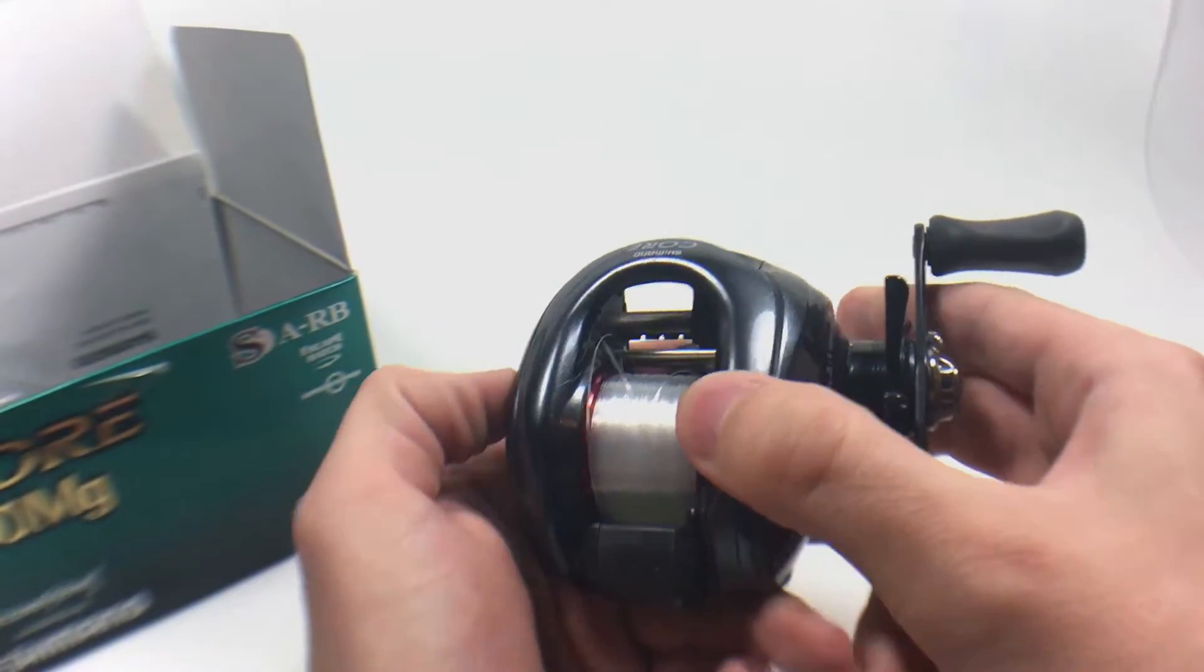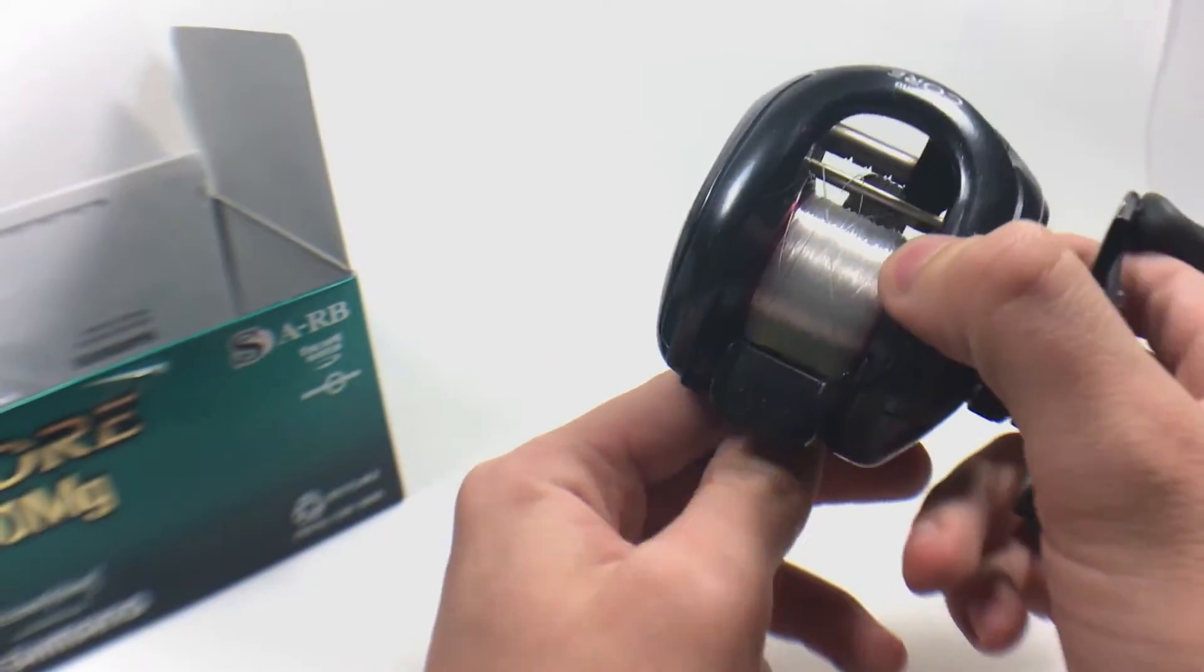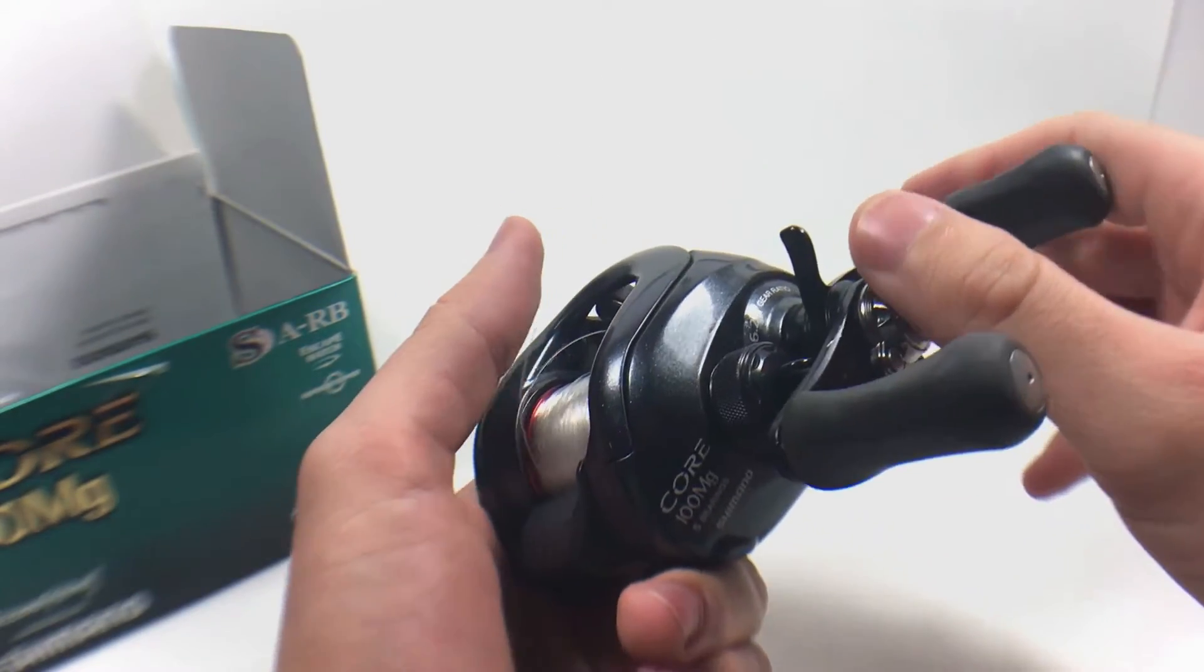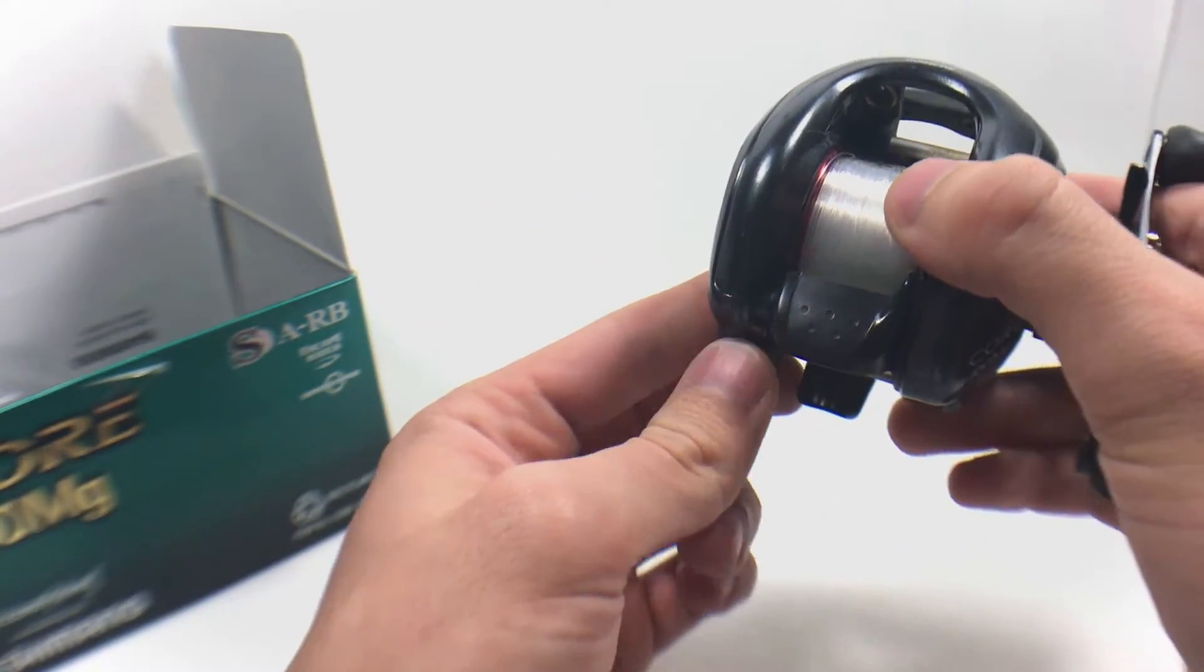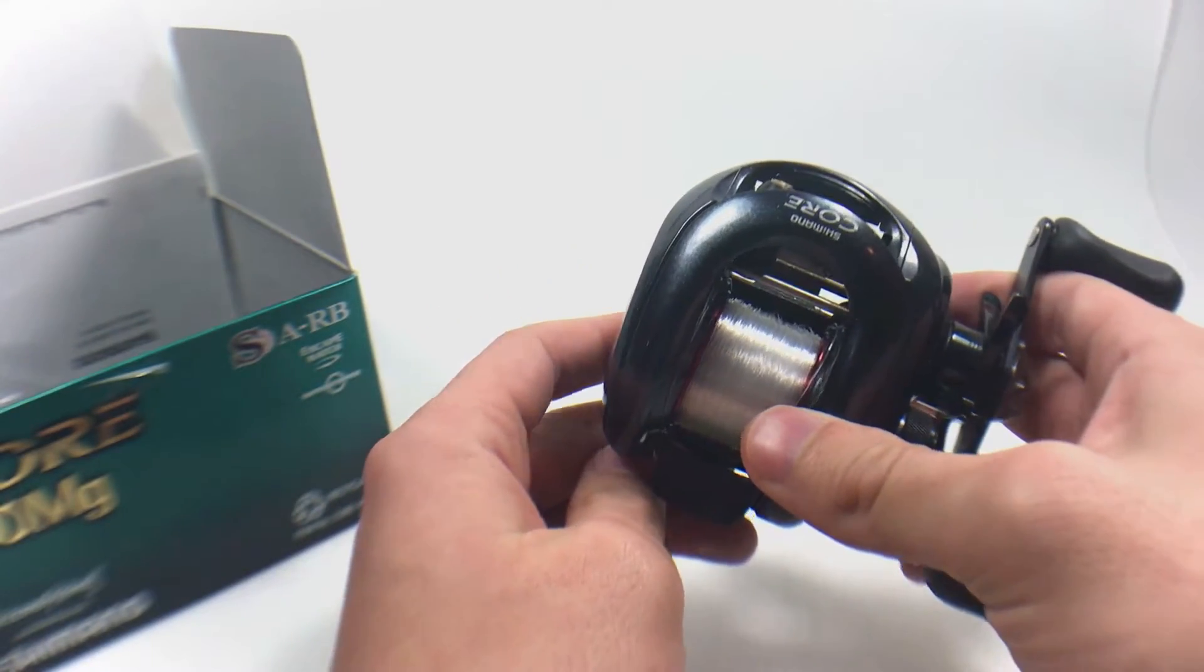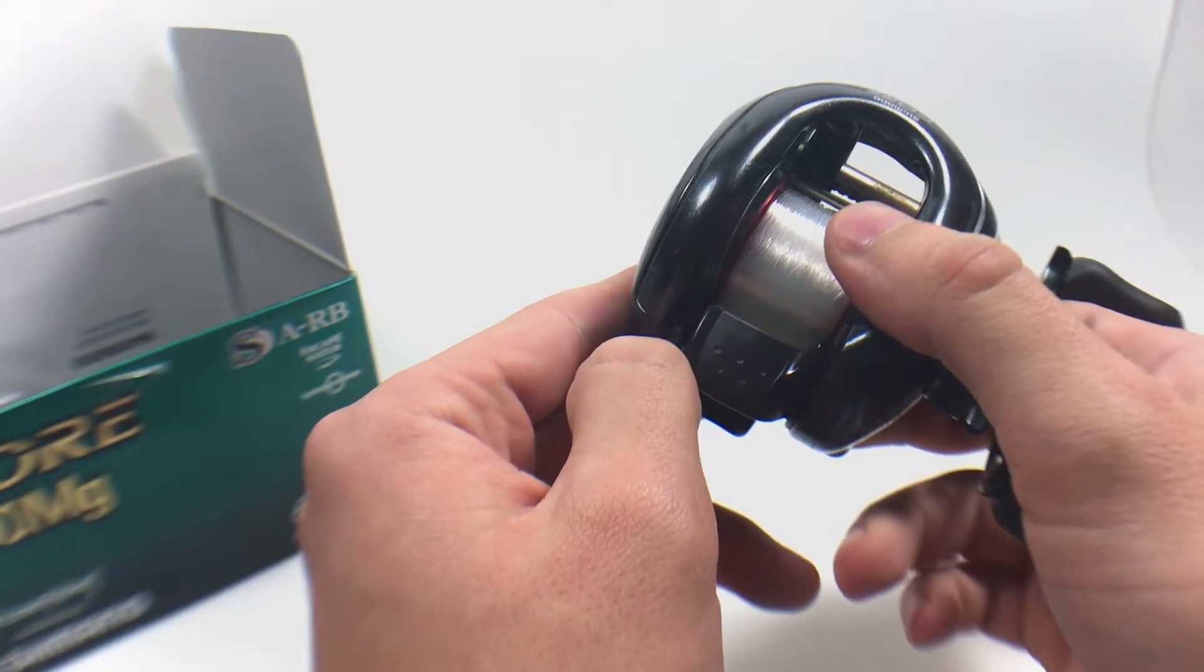This reel has all the bells and whistles you could ask for. Here are some of the specs. Magnesium frame, magnesium side plates, 6.2 to 1 gear ratio, 5 ball bearings. It's super compact and it weighs in at about 8 ounces. Sure, you can find some lighter reels on the market today, but at the time this was still pretty light.